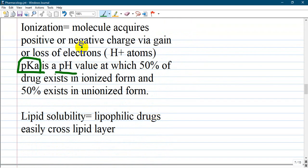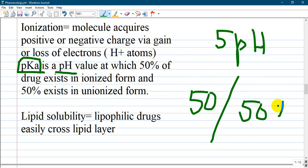Ionization means that molecule acquires positive or negative charge via gain or loss of electrons, hydrogen atoms. pKa is the pH value at which 50% of drug exists in ionized form and 50% exists in unionized form. For example, if a drug has a pH of 5 and for going to this equilibrium, 50% and 50%, it requires a pH of 7. From this to this pH, ionized and unionized form will be 50 to 50.